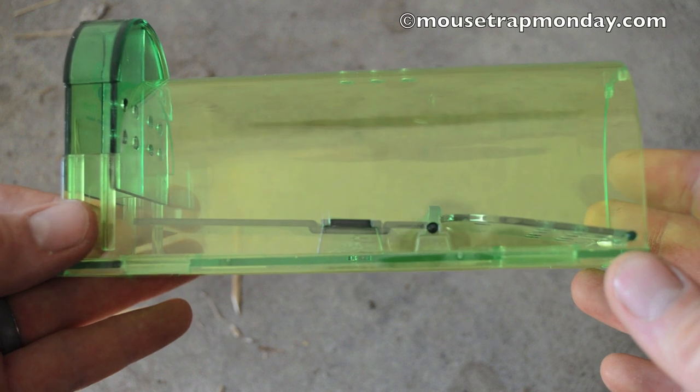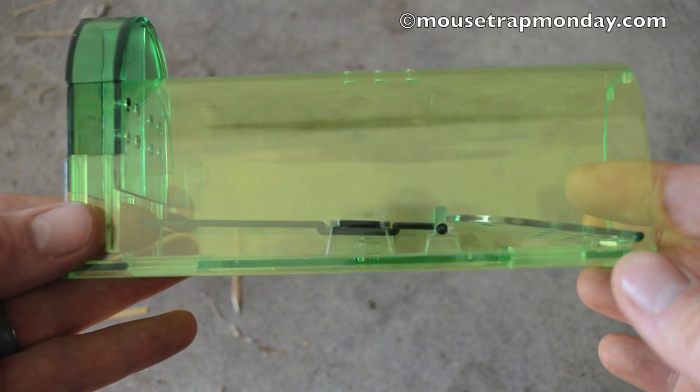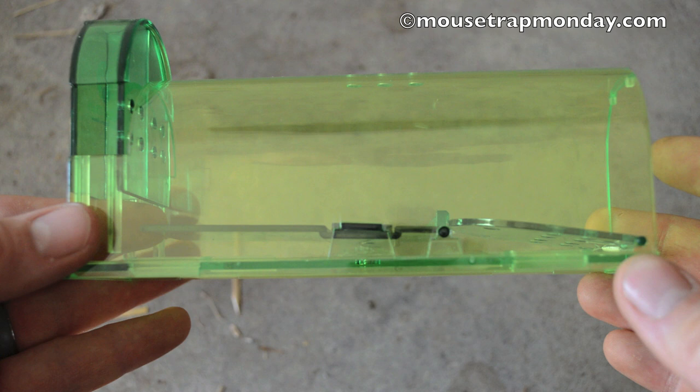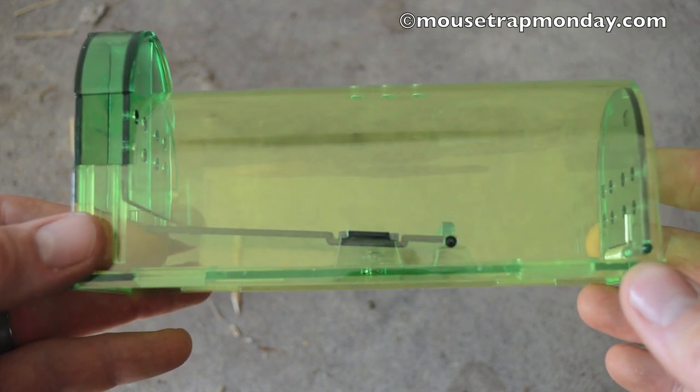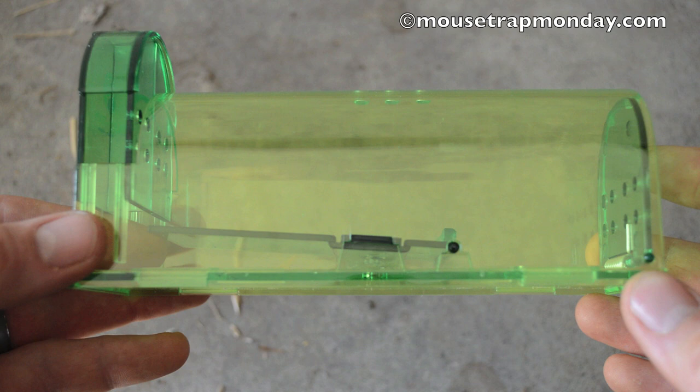So first we'll test out this trap with our pet tame mice just to show you how it works. They'll enter through the front here, step on that back lever, and the door will close. And then we'll go set it up with motion cameras in the barn to see how it actually works with wild mice.